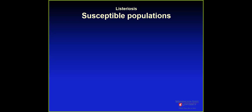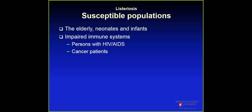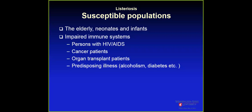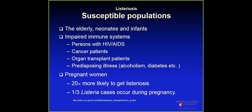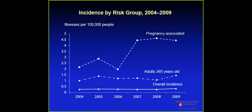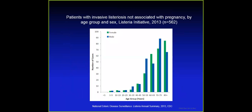Who is susceptible to Listeria monocytogenes? Mostly elderly, newborns, infants, and immunocompromised people such as cancer patients, organ transplant recipients, and those with metabolic disease. Uniquely among foodborne illnesses, pregnant women are also highly susceptible — they are more than 20 times more likely to get listeriosis. As you can see in this chart, pregnant women are at the top, followed by the elderly. The overall incidence is fairly low, but if we exclude pregnant women, the elderly still show more chance of listeriosis infection.